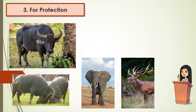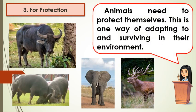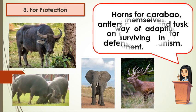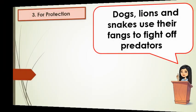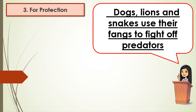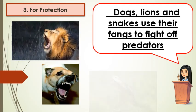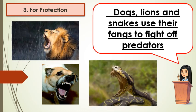Other body parts of animals are used for their protection. Because animals need to protect themselves, this is one way of adapting and surviving in their environment. Horns for carabao, antlers on deer, and tusks on elephants are used for defense. Dogs, lions, and snakes use their fangs to fight off predators.